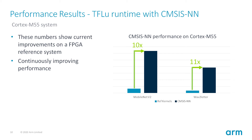This number can differ across systems depending on the software environment settings discussed earlier, and on hardware aspects like memory access latency and cache. The bottom line is you have an open source optimized neural network library that can improve the performance of your application and take it to the next level.